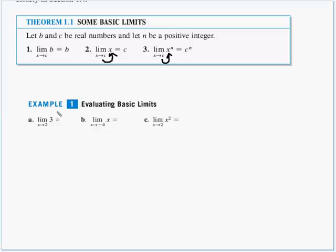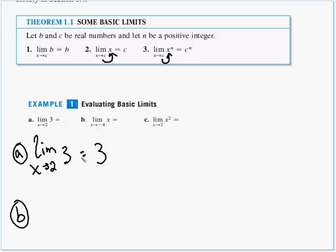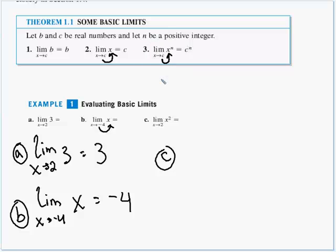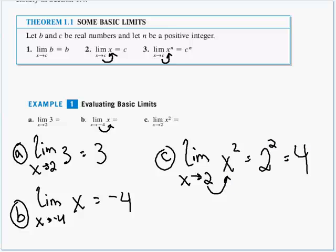In Example 1, we evaluate some basic limits. Part a: the limit as x approaches 2 of 3. That's a constant function, so the limit equals 3. Part b: the limit as x approaches negative 4 of x. We take our arrow number and plug it in for x, so the limit as x approaches negative 4 of x equals negative 4. Part c: the limit as x approaches 2 of x squared — plug that 2 in for x, so it's 2 squared, which equals 4.